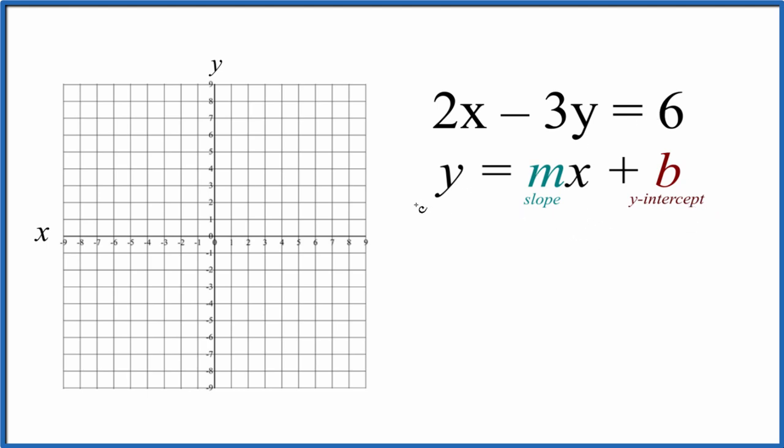What we need to do is get y by itself and then everything over here in this form. So let's subtract 2x from both sides. That'll give us, and then let's put x first and then the 6 after it.